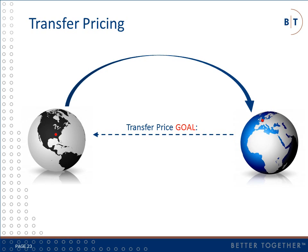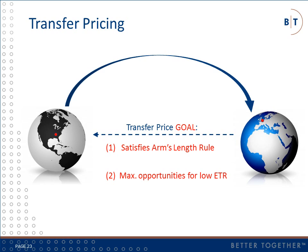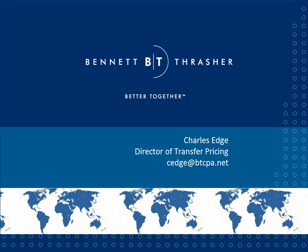In summary, the goal of a transfer pricing analysis should be to set prices for intercompany transactions that meet the arm's length standard while maximizing opportunities to achieve the lowest global effective tax rate and minimizing audit and adjustment risk. This process requires extensive research, analysis, and documentation, and oftentimes deals with situations and transactions that are difficult to categorize. These many gray areas are what make transfer pricing a constantly evolving field for legislators, enforcers, and practitioners alike, and make the practice of setting transfer prices more of an art than a science. My name is Jeff Childs with the Bennett Thrasher Transfer Pricing Group. Thanks for watching our presentation.